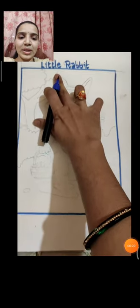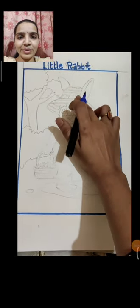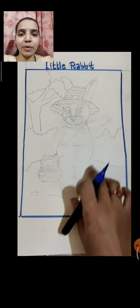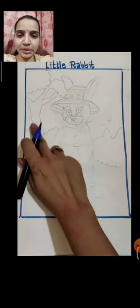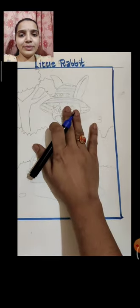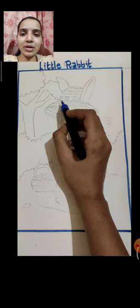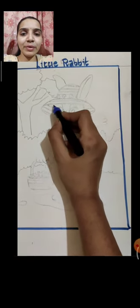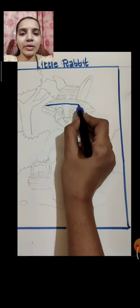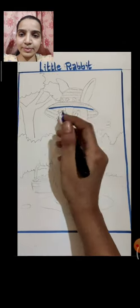So for this topic you will write 'little rabbit standing' - we are going to draw a big rabbit in the middle with a garden background. First I will start drawing with the rabbit's head. This rabbit is wearing a hat, so make a slanting line first like this.